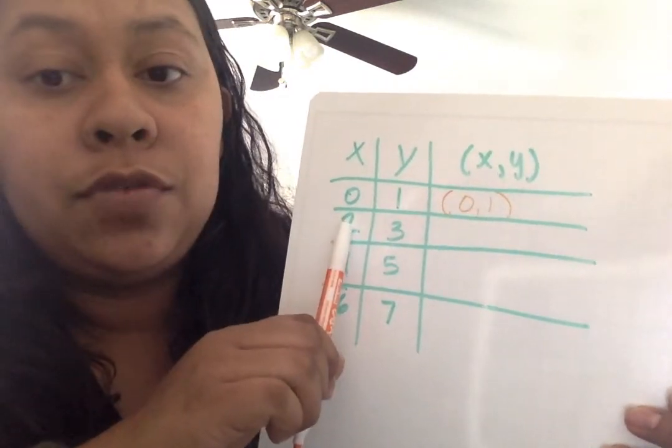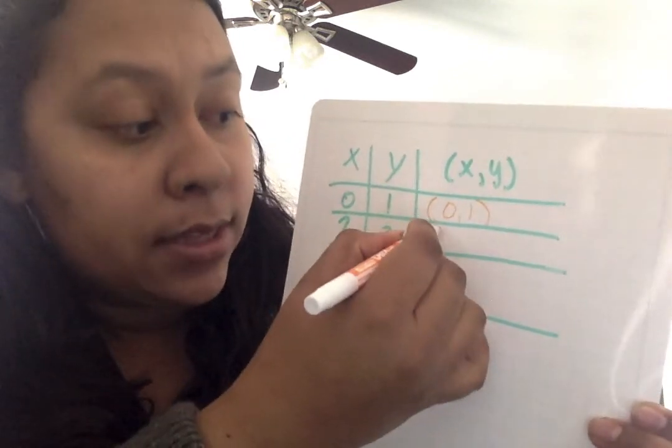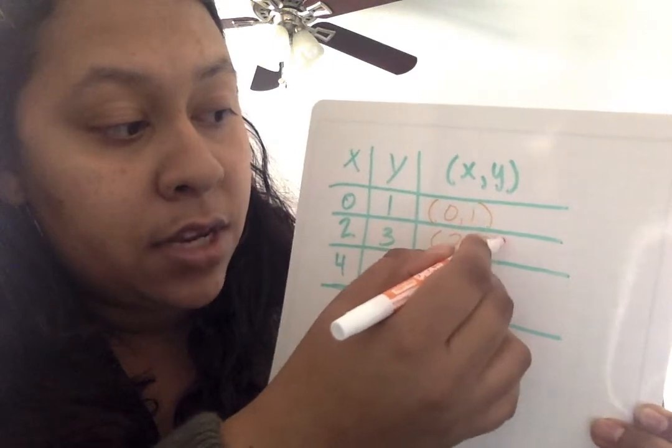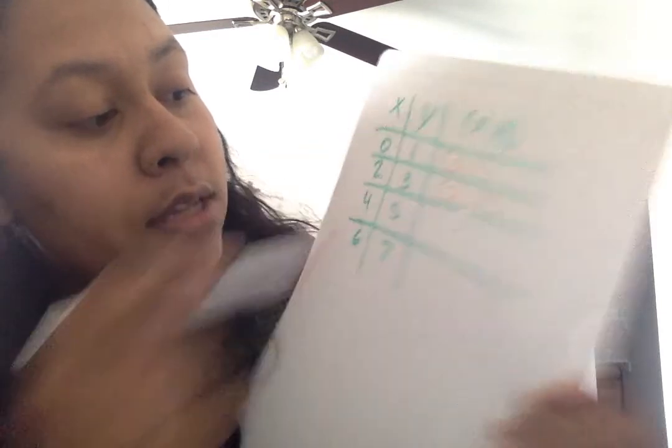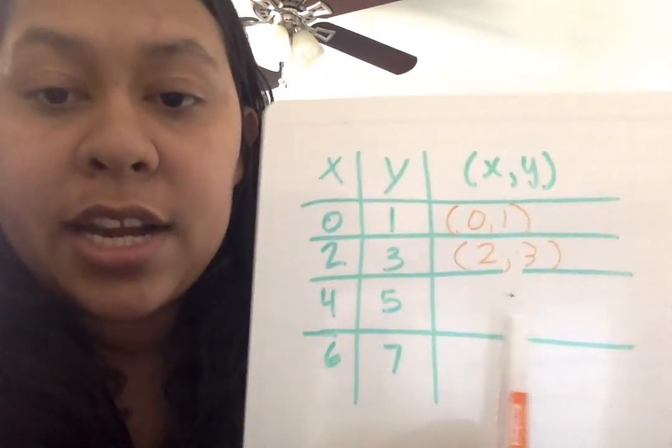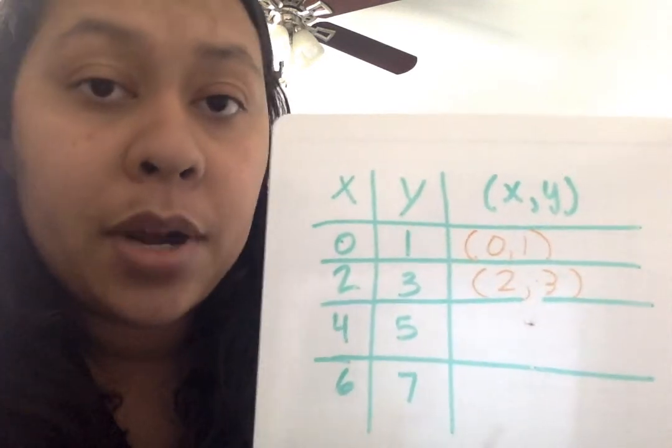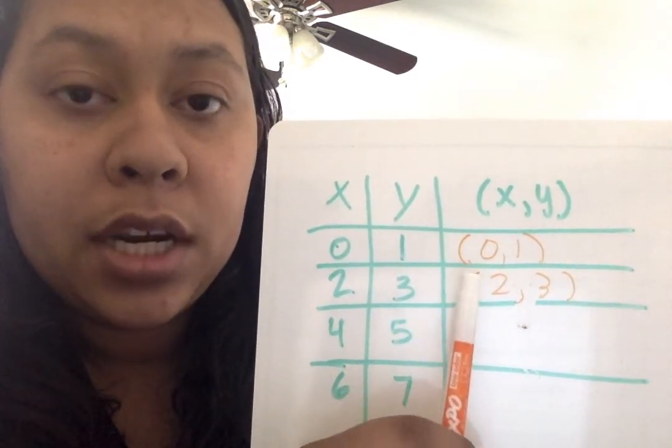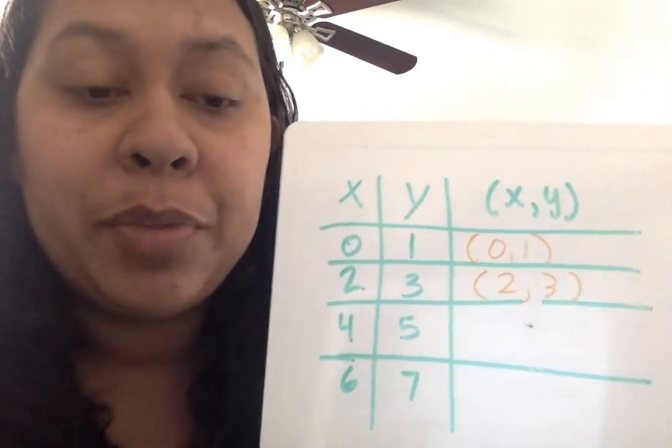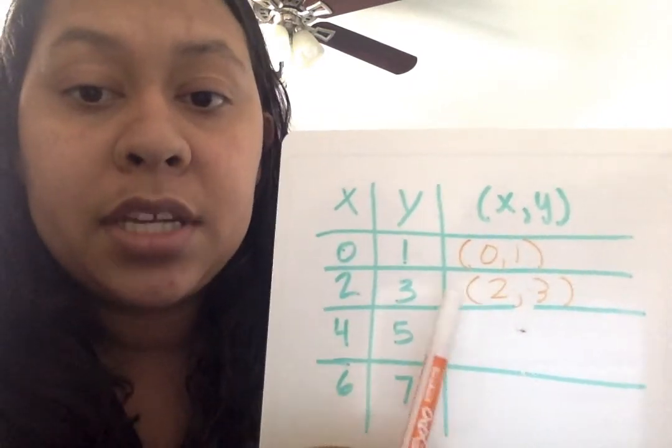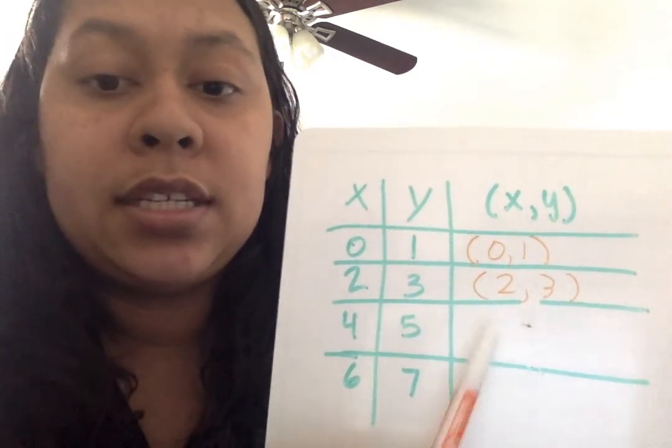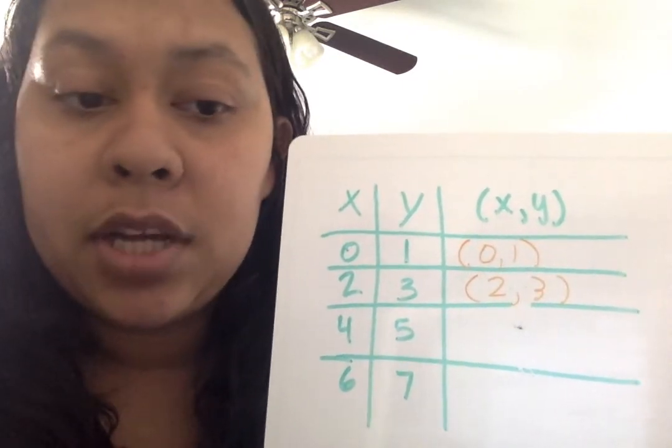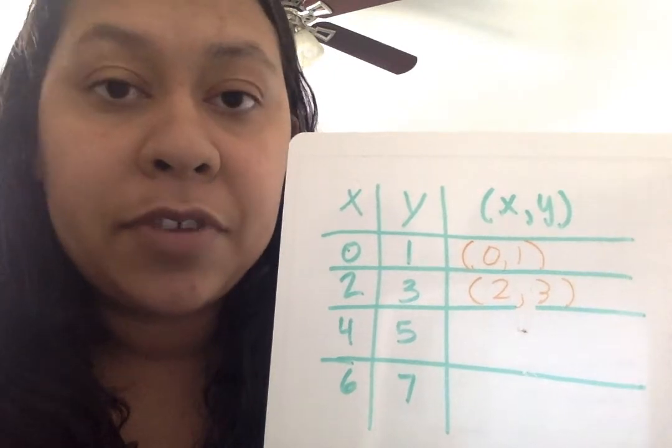So then the next one, we have 2 for X, 3 for Y, so we're going to write parentheses, 2, 3, parentheses. Same thing for your next two blanks. You need to fill in all four of these on your problem set. So I already gave you the first part and the second part. You need to fill in these other two on your paper. Don't forget you have to put parentheses because the parentheses mean that this is a group that stays together. Go ahead and click pause, plug in your answers, and then come back over here and click play.